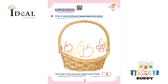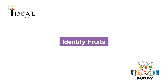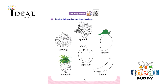Hello everyone. In this page the topic is identify fruits. So here the child has to identify fruits and color them in yellow. The first one is mango, and mango is a fruit, so the child has to color it using yellow color.